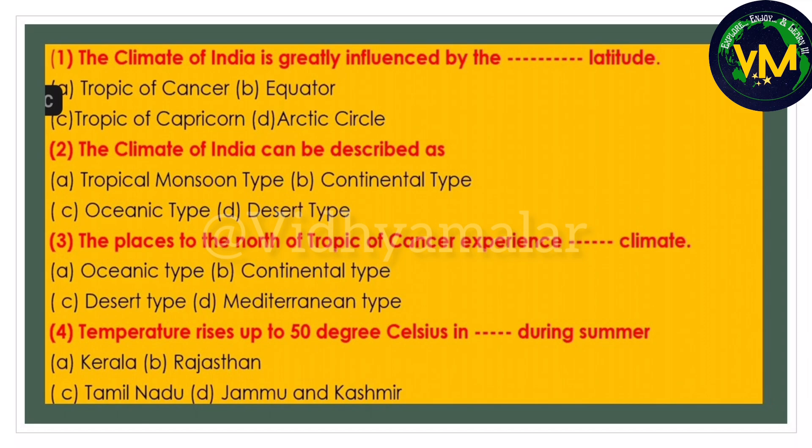Still, let's look at option C: Desert type - do we have fully desert in north India? No, we have the Thar desert only in the northwestern part. Option D: Mediterranean type - in India we do not have Mediterranean type of climate. So after eliminating options A, C, and D, the leftover option is B: Continental type of climate. Fourth question: temperature rises up to 50 degrees Celsius in dash during summer. Since desert regions have very high temperatures, just by looking at the options, Rajasthan is the right answer.